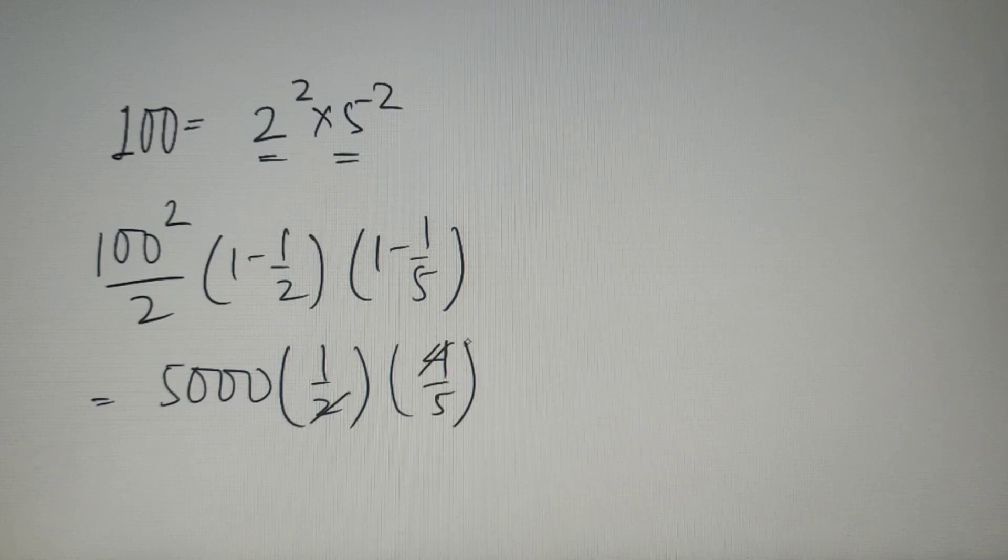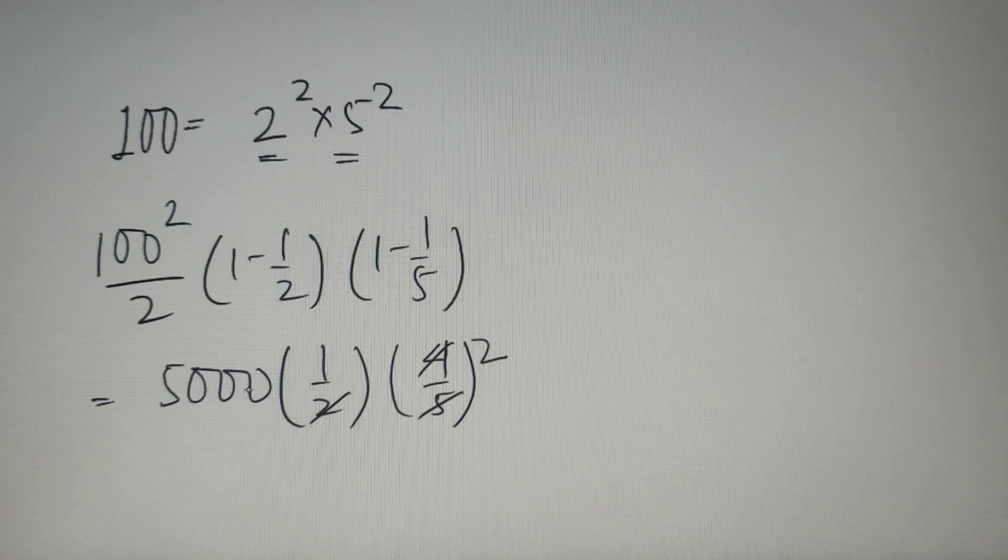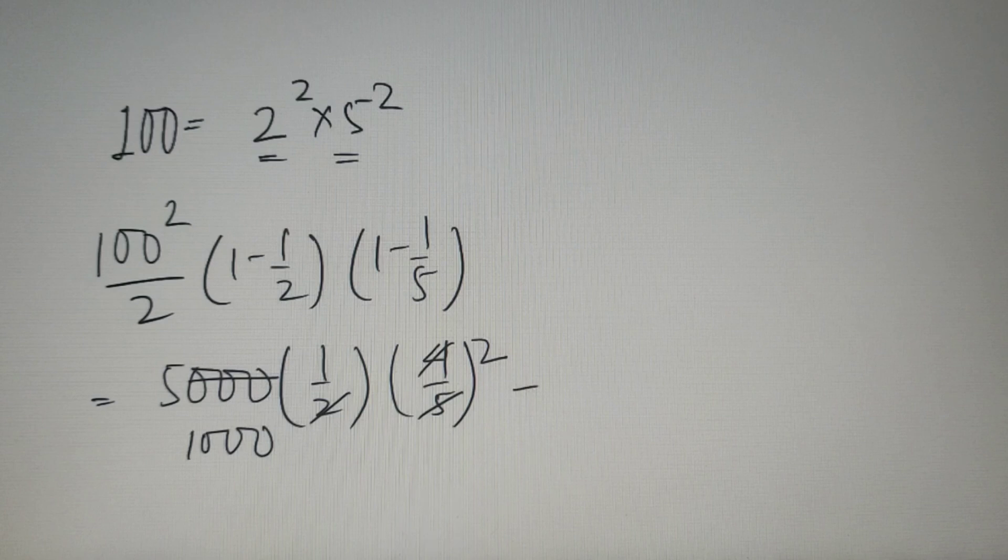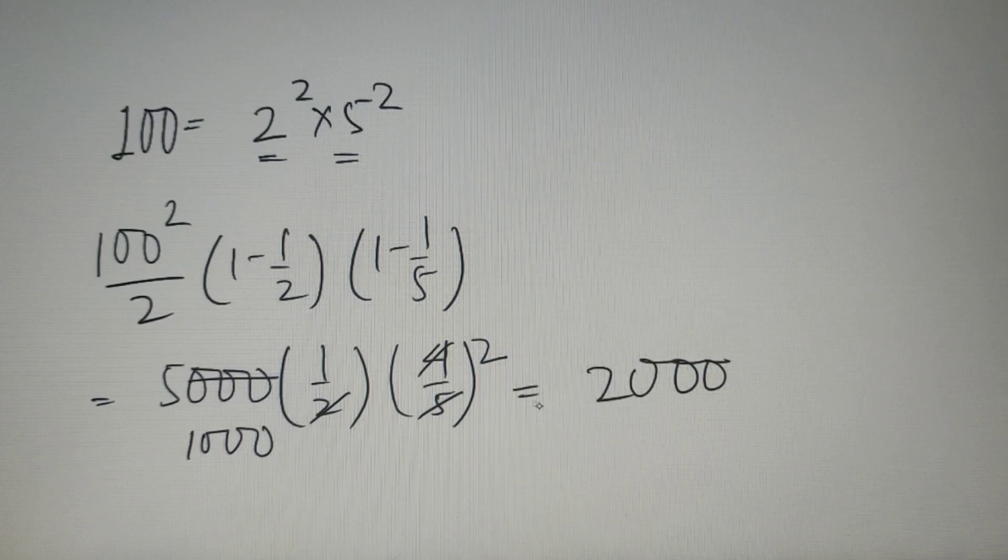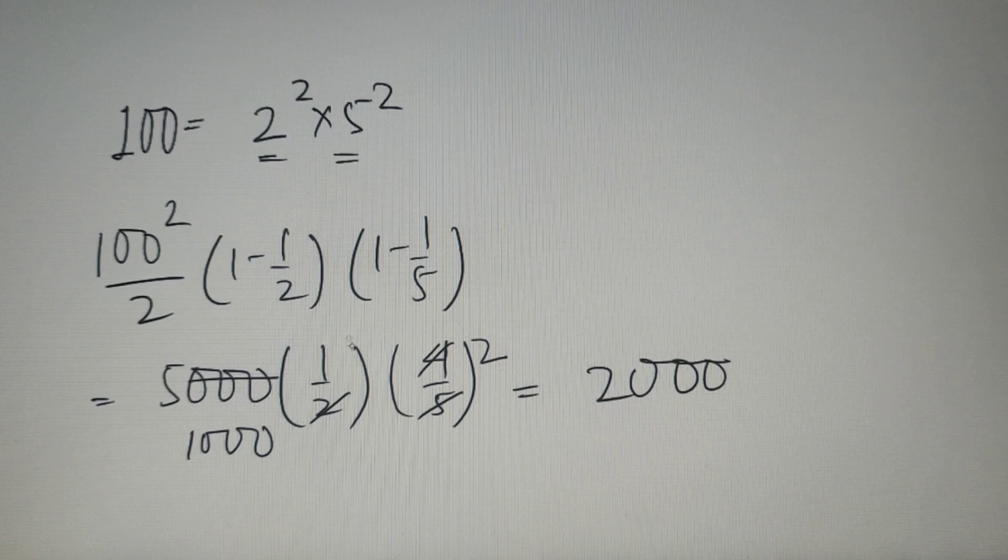Now 2 and 4 will get cancelled and we are left with 2 and 5 and 5000 will get divided and we are left with 1000. So the value is equal to 2 into 1000 which is equal to 2000. So you can see how simply we can apply the formula and calculate the sum of co-primes for any given number.